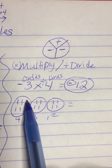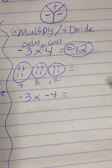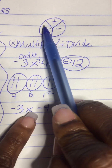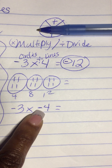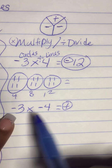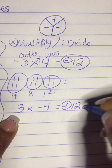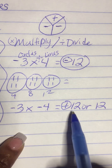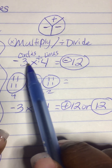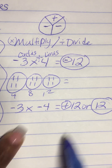So negative 3 times a positive 4 is a negative 12. Let's look at negative 3 times a negative 4. Again, we're going to use our peace symbol. The negative for the 3 — cover up one negative. The negative for the 4 — cover up the other negative. That means my answer is going to be positive. 3 times 4 is still 12, so negative 3 times a negative 4 is a positive 12. And to recap: negative 3 times a positive 4 is a negative 12, and negative 3 times a negative 4 is a positive 12.